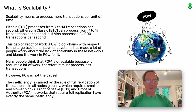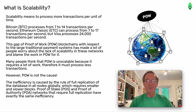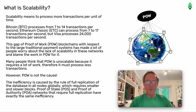What is scalability? Scalability means to process more transactions per unit of time. Bitcoin processes from 7 to 14 transactions per second. Ethereum Classic ETC can process from 7 to 17 transactions per second, but Visa processes 24,000 transactions per second. This gap of Proof-of-Work POW blockchains with respect to the large traditional payment systems has made a lot of people worry about the lack of scalability in these networks and blame the work in Proof-of-Work for it.